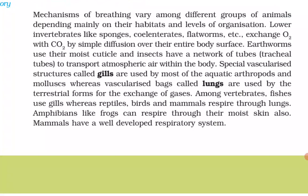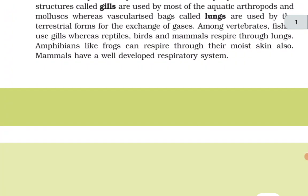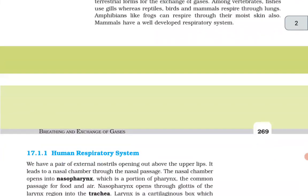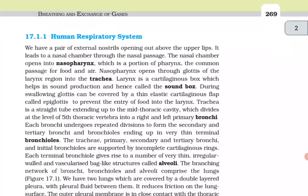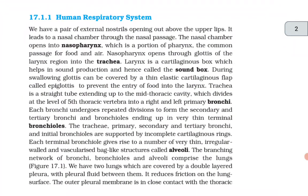Special vascularized structures called gills are used by most aquatic arthropods and molluscs, whereas vascularized sacs called lungs are used by the terrestrial forms for the exchange of gases. Among vertebrates, fishes use gills, whereas reptiles, birds and mammals respire through the lungs. Amphibians like frogs can respire through their moist skin also.